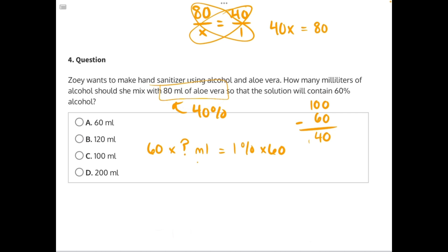So now to solve for x, we need to do opposite operations, divide both sides by 40, leaving us with x equals 80 divided by 40 is 2. So now we know that 2 milliliters is equal to 1% of the solution.